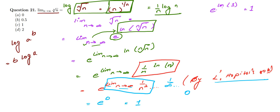Anything to the power 0 is always 1, so e^0 = 1. It doesn't matter what the base is — any number raised to the power 0 gives 1. Hence, our answer to question 21 is 1, that is option C.